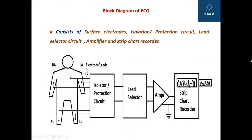For the block diagram of ECG, you can clearly see here the connections which are directly provided to the body of the patient. These are the leads and electrodes, and thereafter comes the isolator or protection circuit. Then the next block is the lead selector, then the bioamplifier, and the last block is the strip chart recorder, or the display unit.